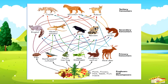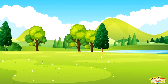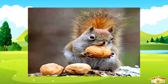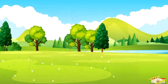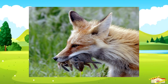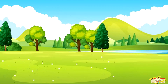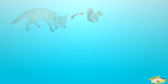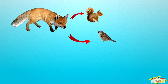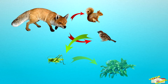In a food web, each animal can be connected to many other plants and animals. For example, a squirrel might eat some nuts or fruits, and then a fox might eat the squirrel. But the fox might also eat birds, and the birds might eat insects, and the insects might eat plants, and so on.